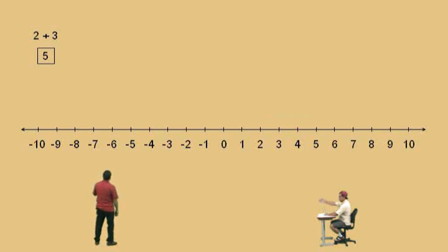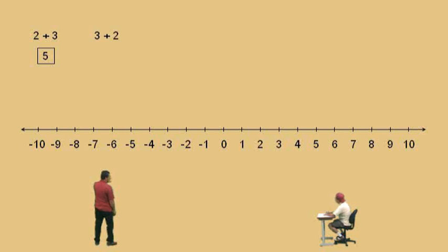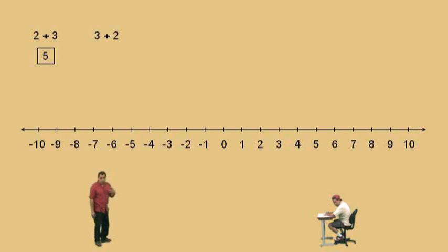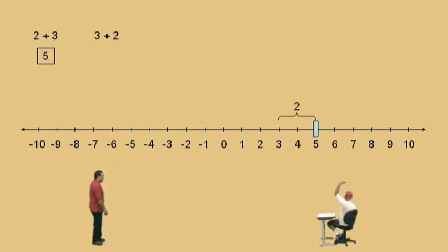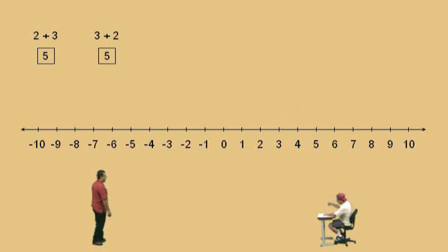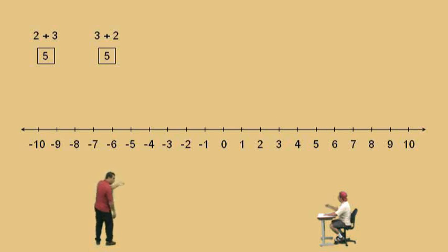Now watch what happens here, Charlie. We're going to switch the order on two plus three and make it three plus two. If we're doing three plus two, we start at three and we move to the right two times, which again gives us five. So two plus three and three plus two both give us the same answer, correct? Yes.